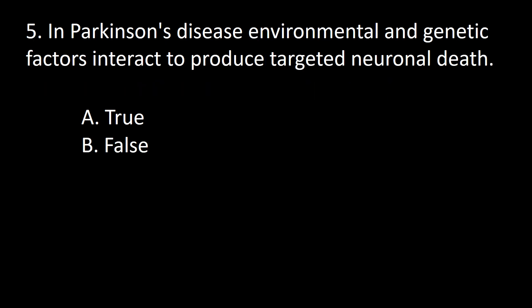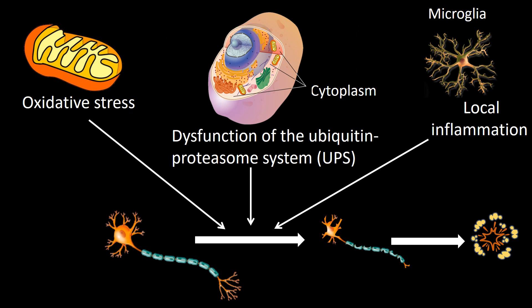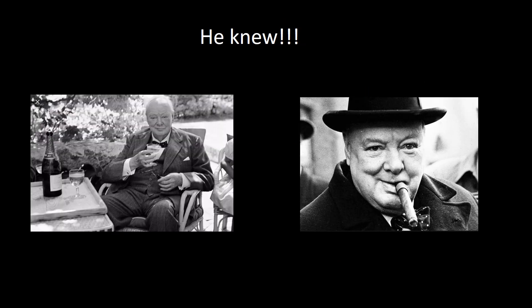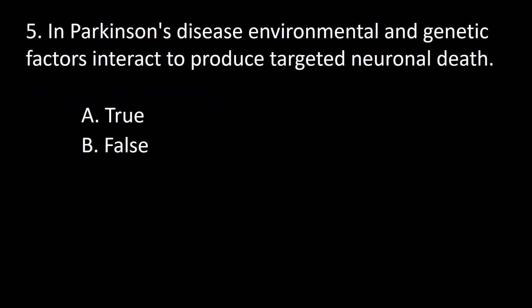Next question: In Parkinson's disease, environmental and genetic factors interact to produce targeted neuronal death — A, true; B, false. Neuronal death in Parkinson's disease occurs in selective nuclei, most notably in the pars compacta of the substantia nigra. It appears to occur due to oxidative stress at the mitochondria, dysfunction of the ubiquitin-proteasome system in the cytoplasm, and local inflammation. The cause appears to be genetic — proven in only about 5% of cases — and environmental. Exposure to pesticides may increase risk; some authorities believe alcohol, coffee, and smoking decrease risk. So the answer is true.